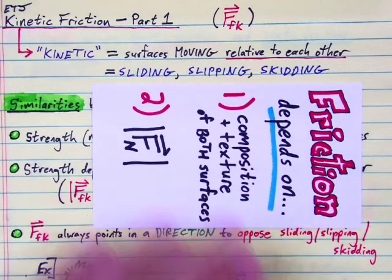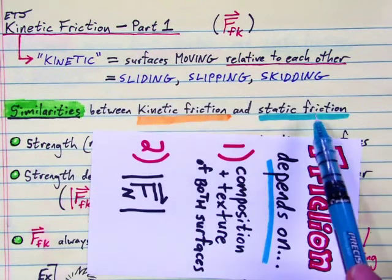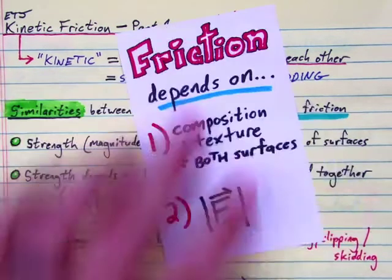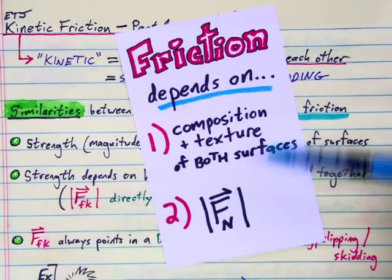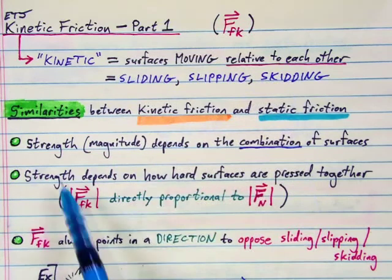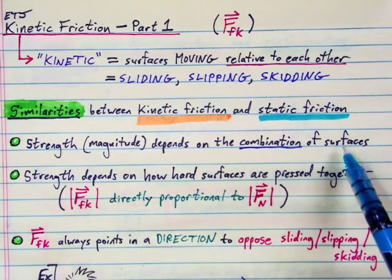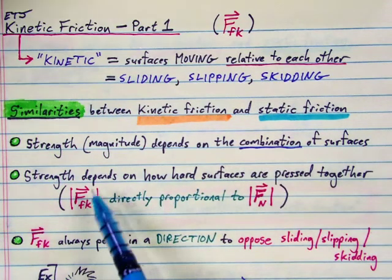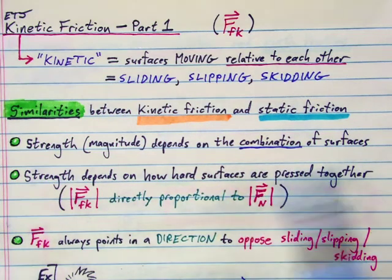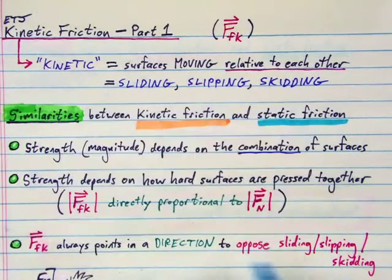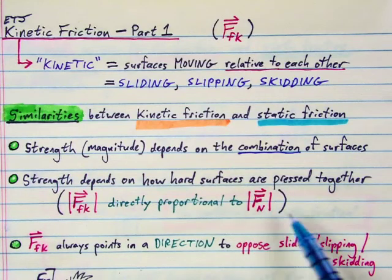Let's look at three similarities and three differences between kinetic friction and static friction. The similarities start with the two principles of Coulomb's model for dry friction. The strength or magnitude of kinetic friction does depend on the combination of the two surfaces, and it depends on how hard those surfaces are pressed together, such that the magnitude of the force of kinetic friction is directly proportional to the magnitude of the normal force between the surfaces.